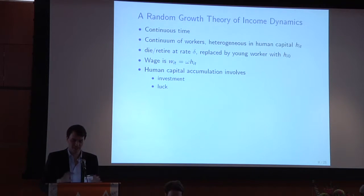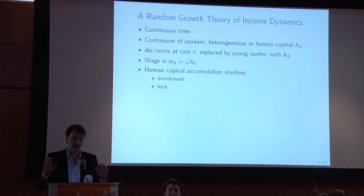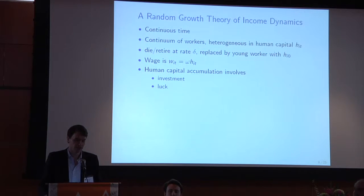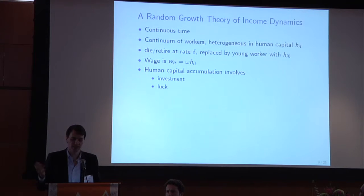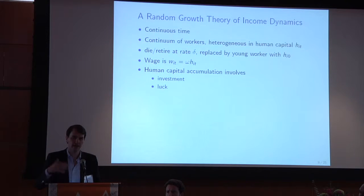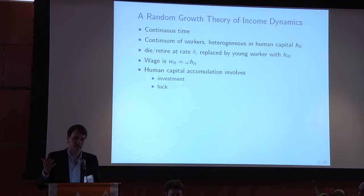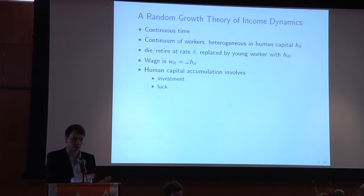Here's the simplest possible theory of top income inequality. Time is continuous, there's a continuum of workers who are heterogeneous in something like human capital — their productivity. They die or retire at some rate delta, and are replaced by young labor force entrants with some initial human capital. Their wage is proportional to their human capital — a skill price times human capital. Human capital accumulation involves two elements: investment, such as going to school or learning on the job, and an element of luck.